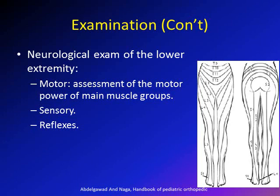A very important part of the examination is neurological assessment of the lower extremity, to determine whether the cause of back pain is compressing nerves and causing neurological deficit. Motor examination assesses the main muscle groups: hip flexors and extensors, knee flexors and extensors, ankle, and big toe dorsiflexors and plantar flexors. Sensory examination checks for dermatomal sensory deficits. A quick picture is provided to remind you of the dermatomal nerve supply for the lower extremity. Reflexes to check include the knee jerk and ankle jerk reflexes.